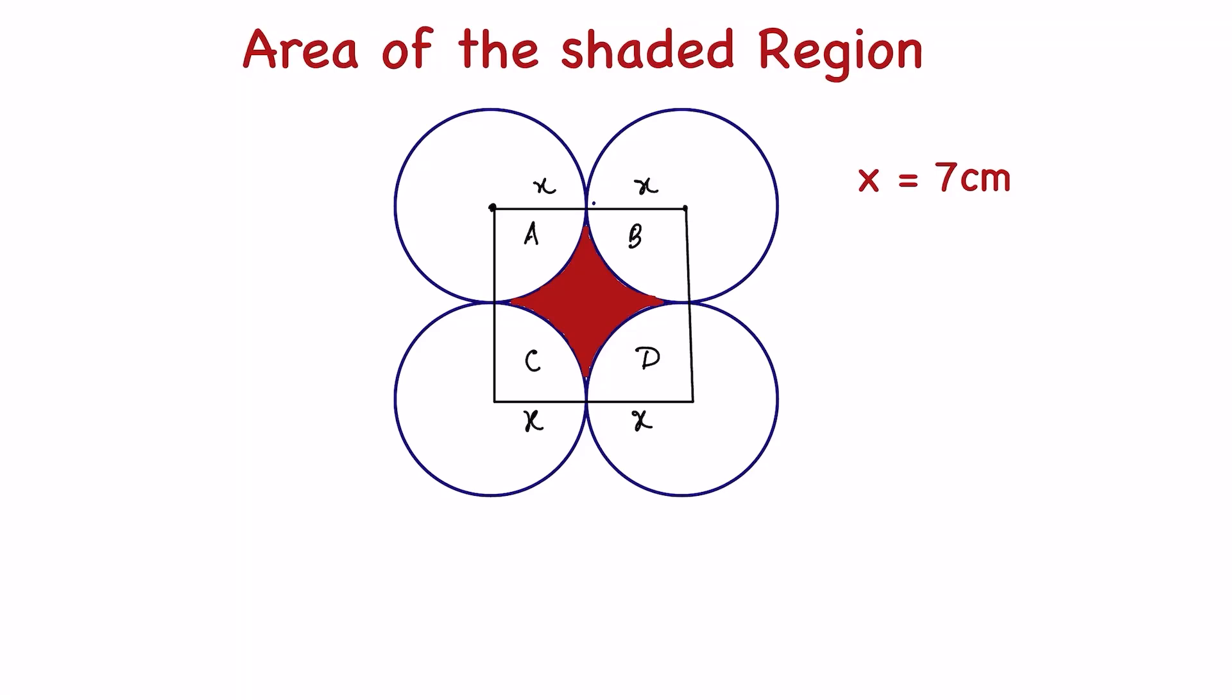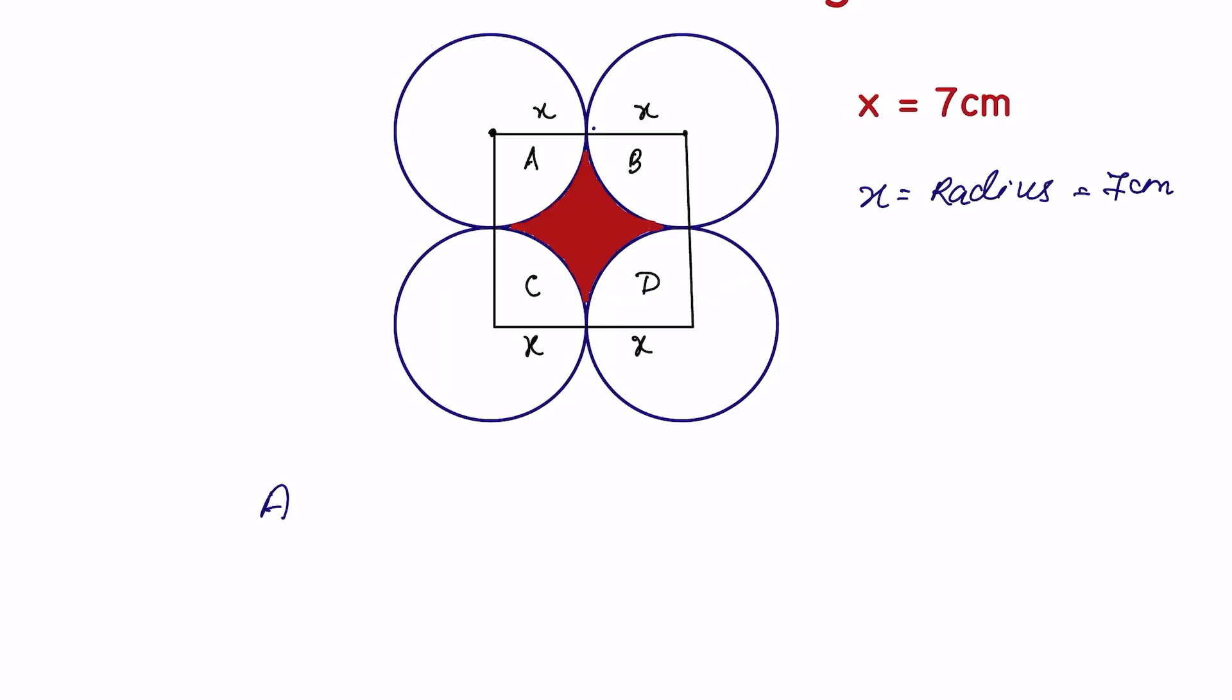Given here four adjoined circles and within it inscribed a square, and we have to find the area of the shaded region where x is the radius and it is equal to 7 cm.